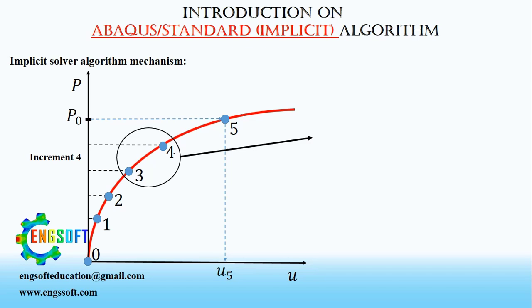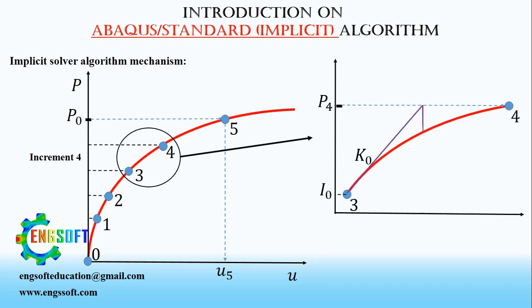At the start of the increment, which is at 0.3, all required parameters are known. Implicit Solver should calculate parameters at the end of the increment, which is 0.4. For this purpose, Solver will calculate the stiffness using the data at 0.3, and use the stiffness to predict the displacement at the end of the increment.